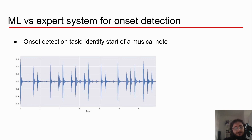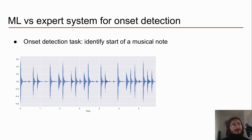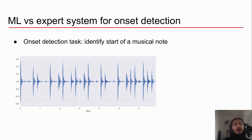Let's look at the difference between machine learning and more traditional AI systems like expert systems, using onset detection as an example. Onset detection is a task common in audio analysis and AI music — all you need to do is identify the starts of a musical note. Imagine you have a melody with a series of different musical notes, and you want to identify when each note starts. You have a waveform where each note appears as a burst of energy, a peak on the y-axis.